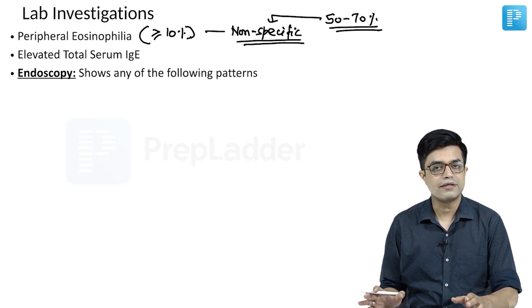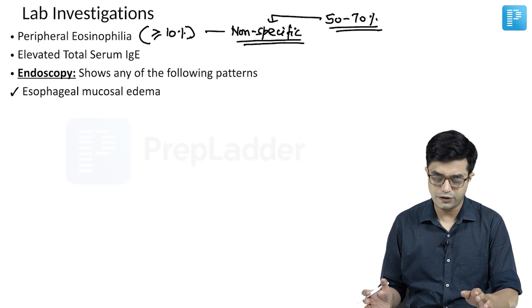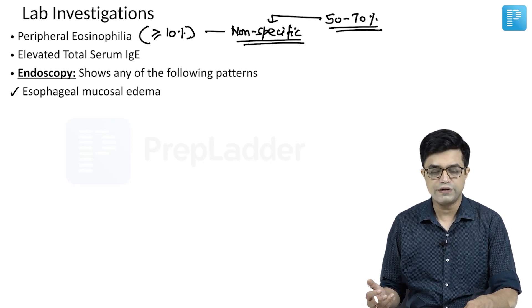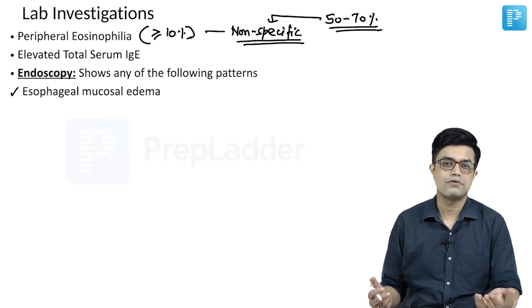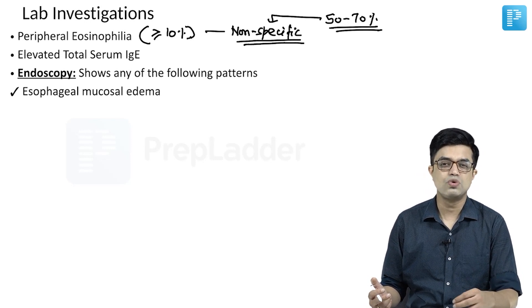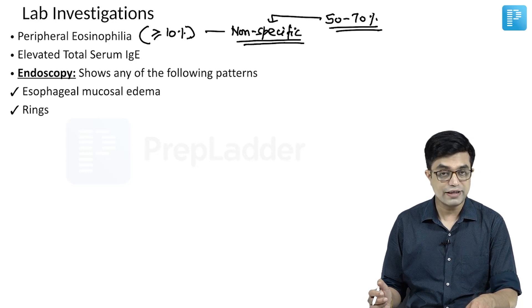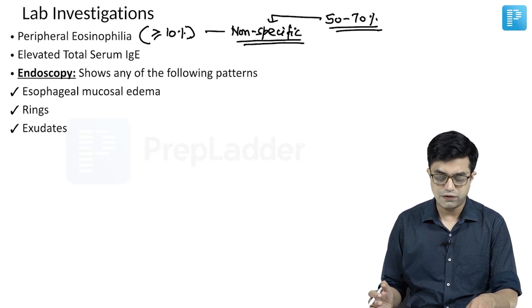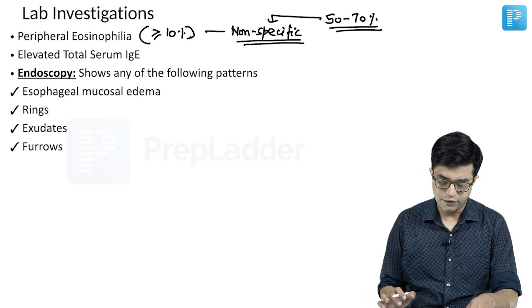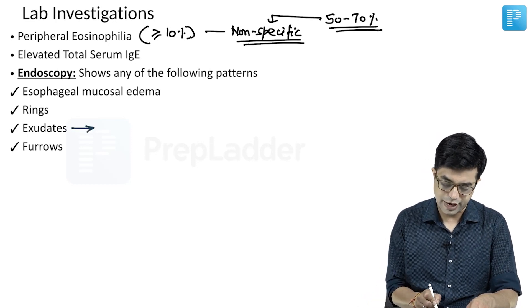On endoscopy, any of the following patterns can be seen: diffuse esophageal mucosal edema which narrows the lumen with smoothening of the entire curvature, rings being present, and exudates.